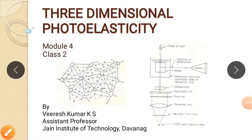Welcome to the second class of three-dimensional photoelasticity. In the last class we discussed the stress freezing technique and scattered light polariscope, which are very important topics for Module 4. Next, we are going to discuss the scattered light methods.